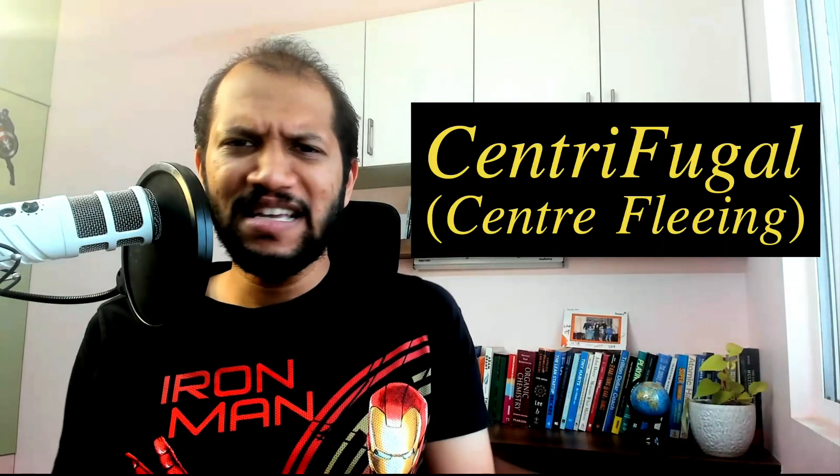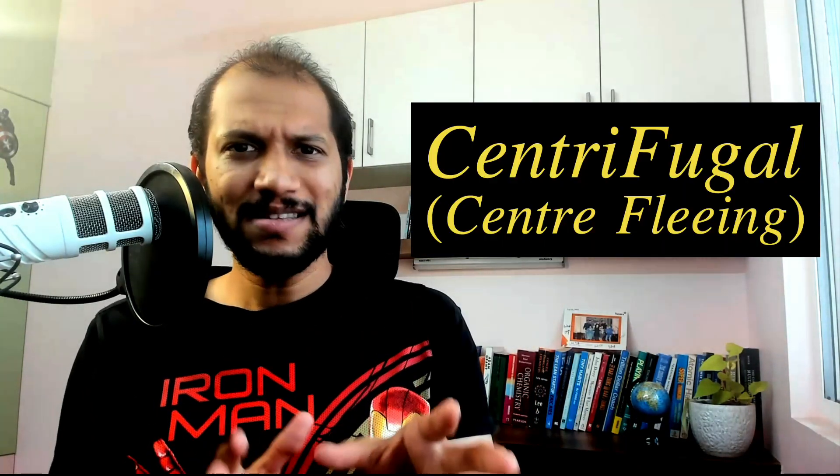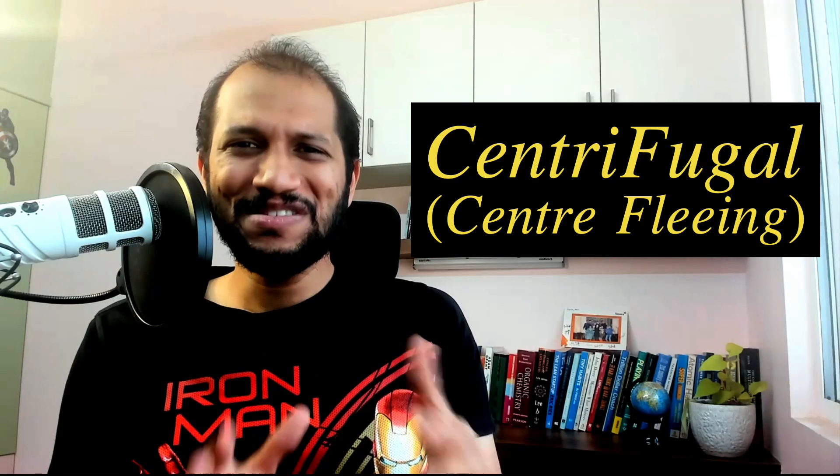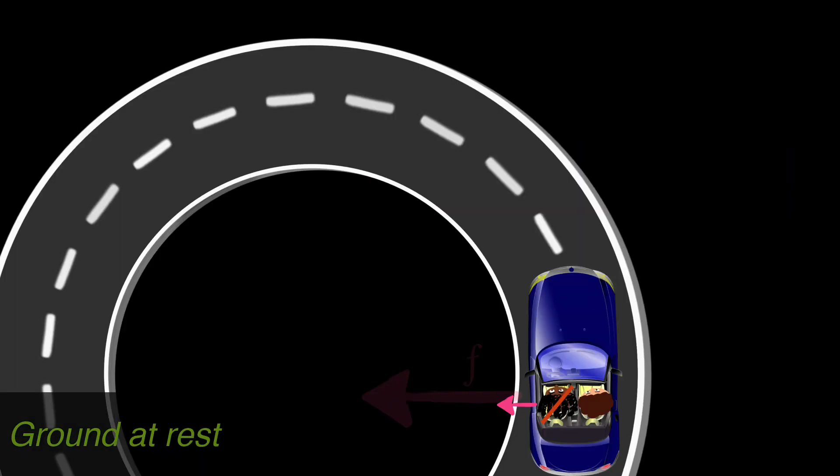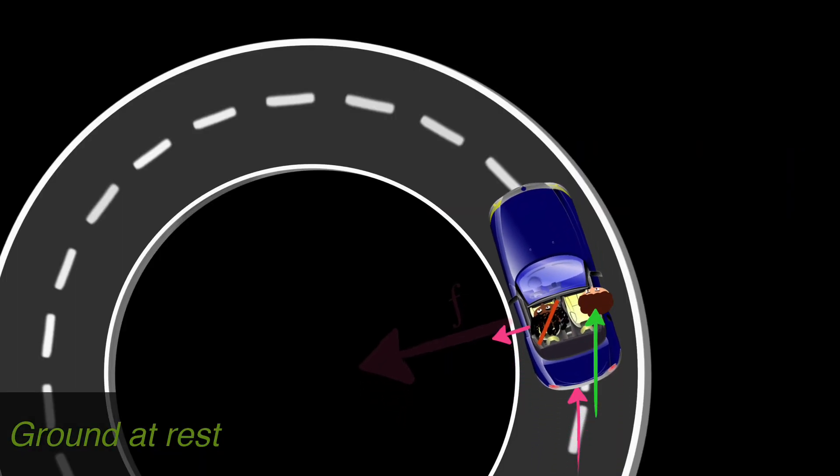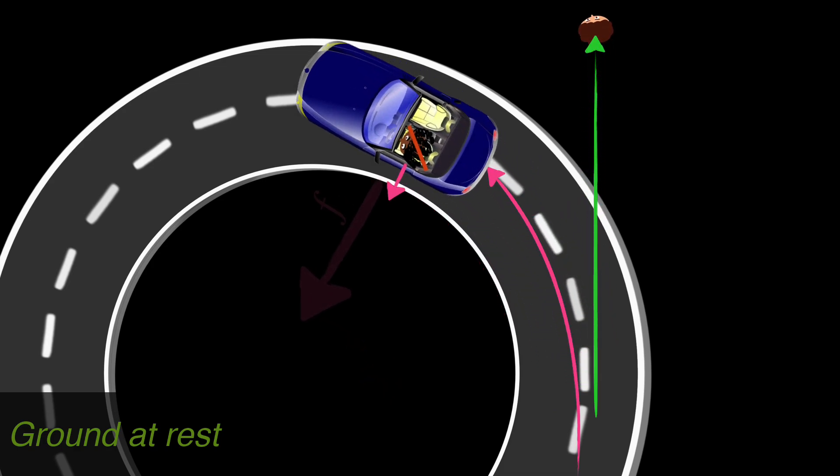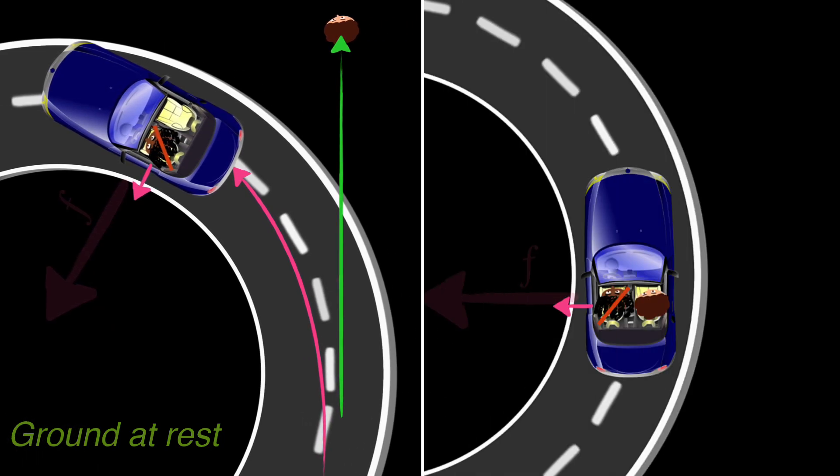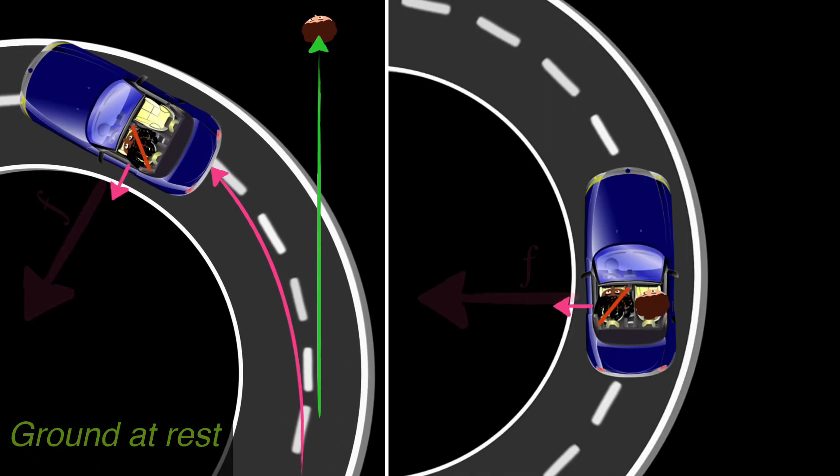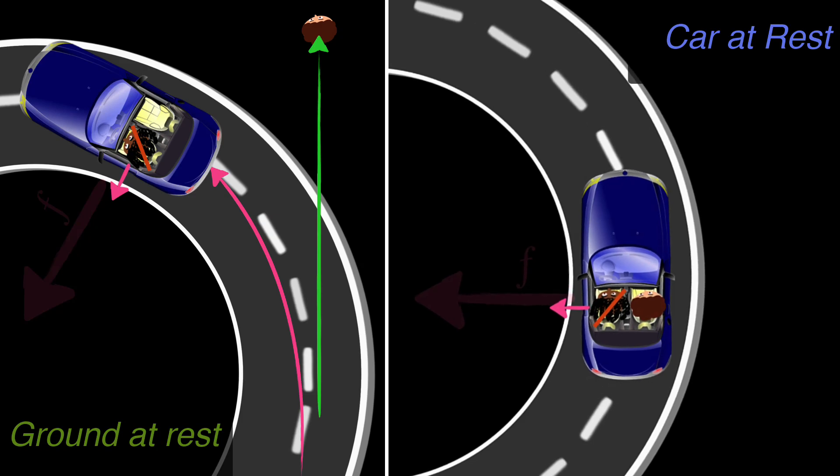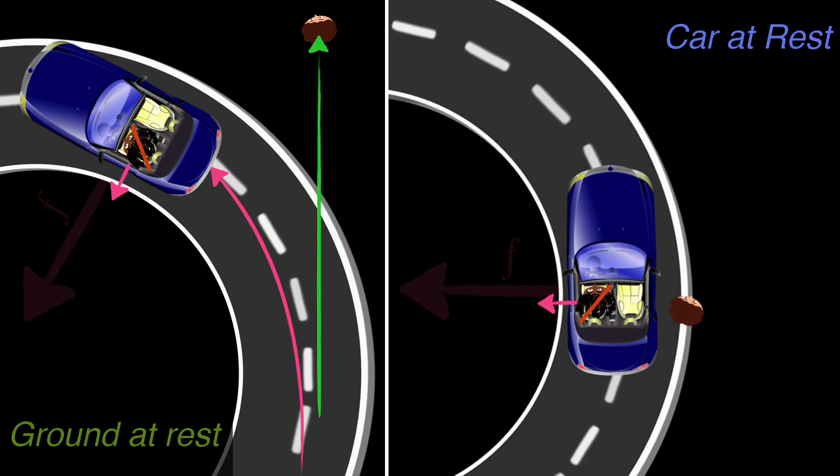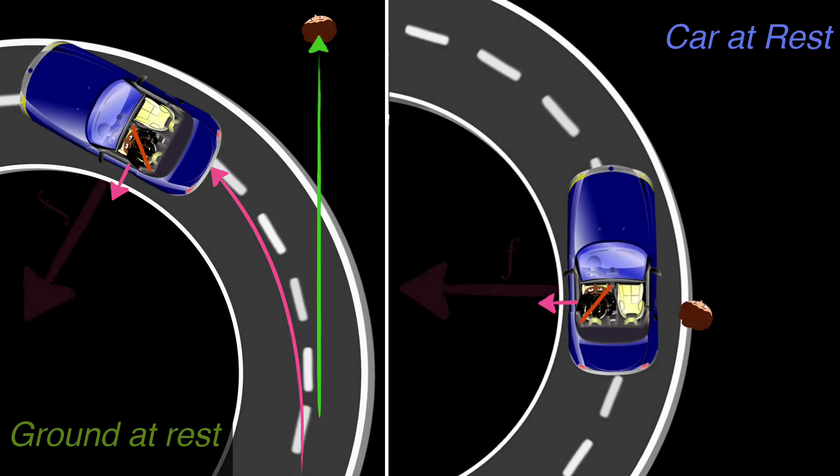Okay, finally, why do people talk about this centrifugal force if it's not there? The short answer is to actually make your life easier. If you look at the car, there's just so much happening. Your friend is going in a straight line. Your car is accelerating away from him. There's just so much motion happening. So calculations become a little bit more difficult, right? That's where we think, hey, let's just jump into the car and just assume our car is at rest. And let's assume the rest of the world is revolving around us. This is just so much easier to make our calculations.